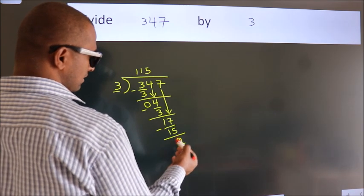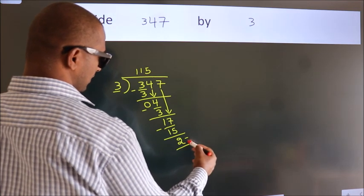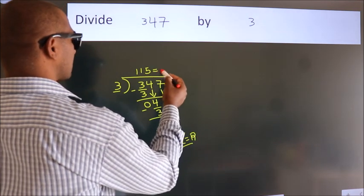After this, no more numbers to bring down. So we stop here. This is our remainder. This is our quotient.